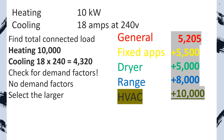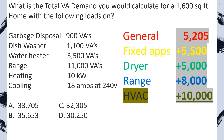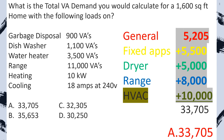Now all we have to do is total all of our loads. Make sure that you push the equals button in between each addition, because sometimes when you add a bunch of numbers without clearing it out, it will mess up inside the calculator. So I'm going to do mine like this: 5,205 plus 5,500, hit equals, then plus 5,000, plus 8,000, plus 10,000, pushing equals in between each time. We end up with 33,705, and we select A.